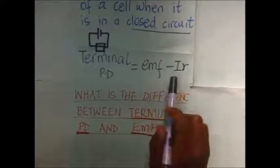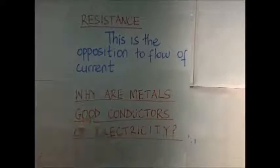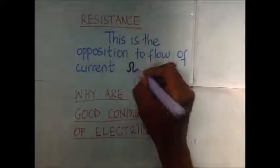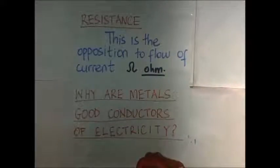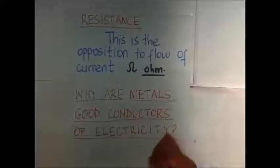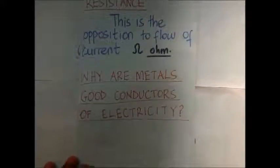We'll look at internal resistance a bit later. Resistance is simply the opposition to the flow of current, and the SI unit for resistance is the Ohm. The Ohm is the resistance of a conductor that has a current of 1 ampere flowing through it with a potential difference of 1 volt across its ends. Metals are good conductors of electricity because they have free-moving electrons.